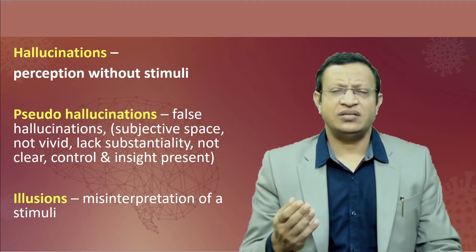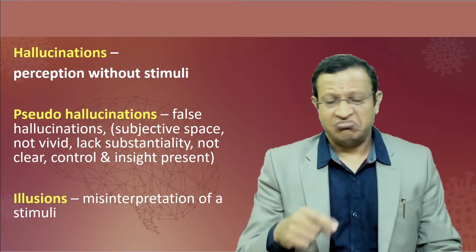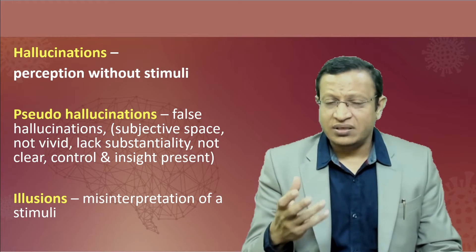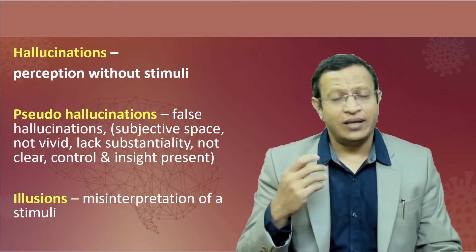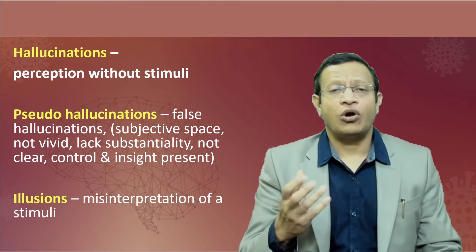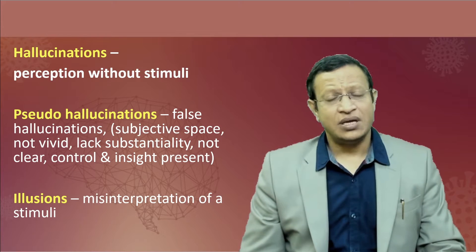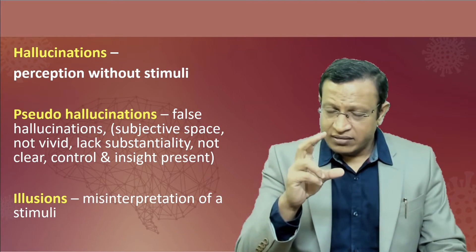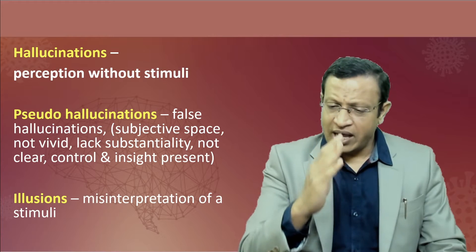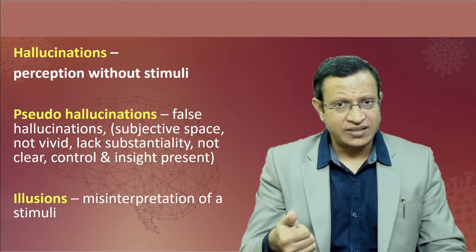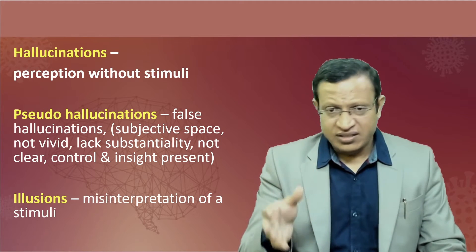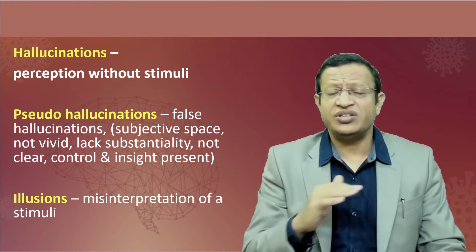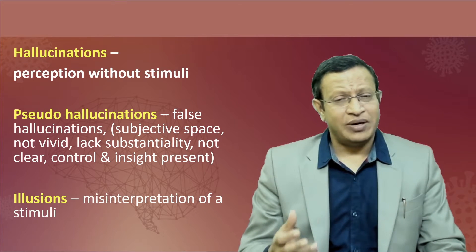Pseudo-hallucinations are false hallucinations that are in the subjective space; they are not vivid, not clear, they lack substantiality, the person can control them, and they have complete insight that they belong to them and are out of their mind process. The differentiation between hallucination and pseudo-hallucination is a very common exam question. Clarity, reality, and substantiality are very common in hallucination, and hallucination comes from the objective space. Pseudo-hallucination comes from the subjective space; clarity and vividness are not there, borders are not vivid, complete control is there, and insight will be there. Hallucinations are not under control. Illusions are nothing but misinterpretation of the stimuli.